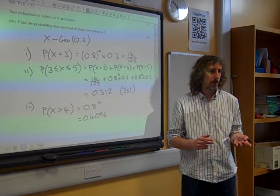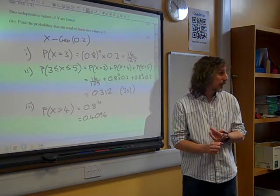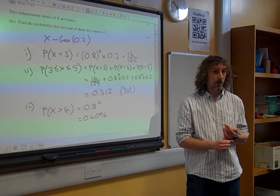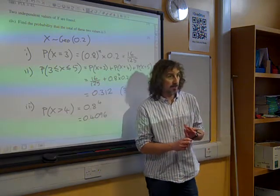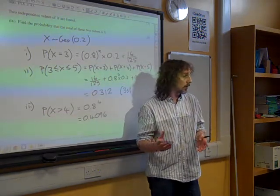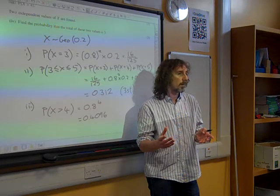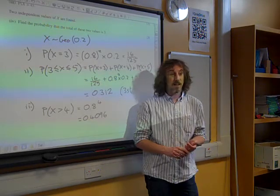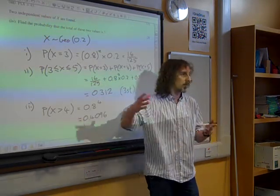Well, the only way we can make 3, we can't have 0, remember, as a geometric thing, because geometric says it's the number of trials that we take, and we can't have no trials before we're successful. So the only values that X can take are 1, 2, 3, 4, 5, 6, and so on.